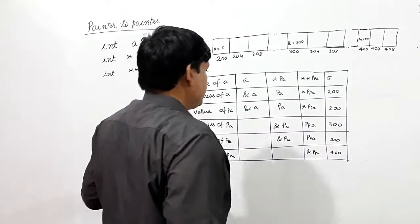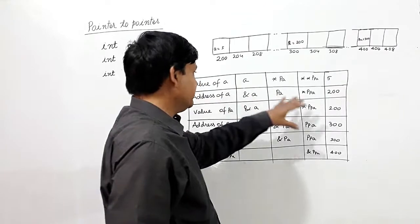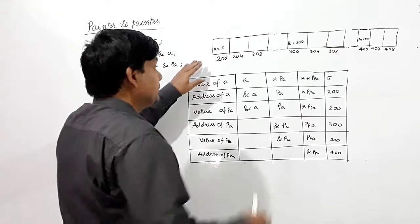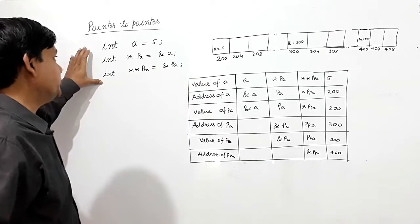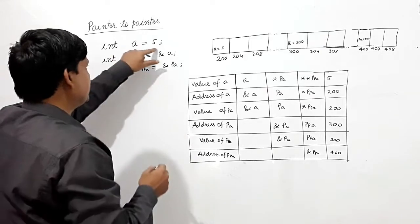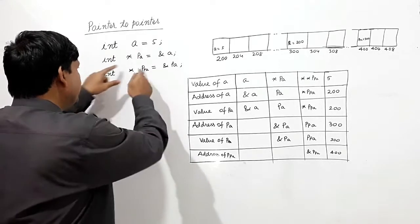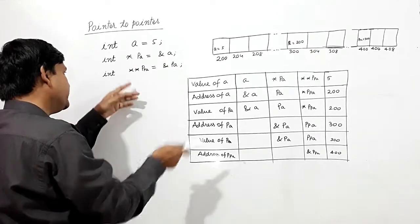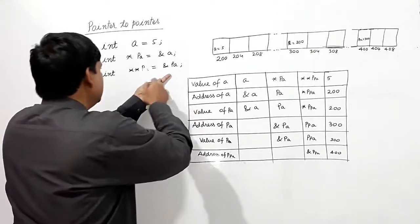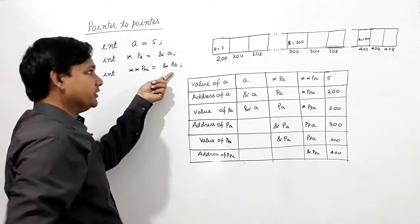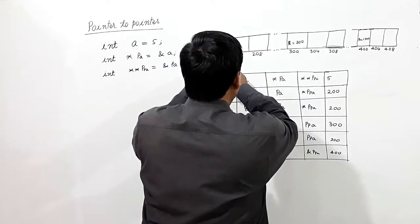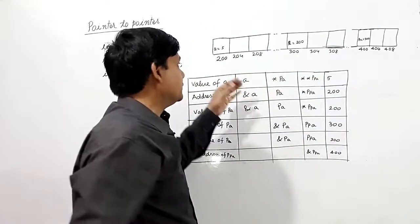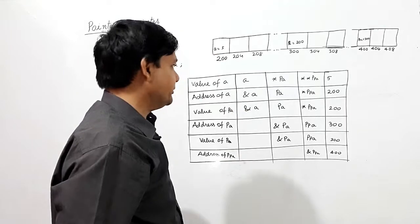I have written a table here. A double pointer has been used where the value of 'a' is assigned 5, a pointer to integer has been assigned the address of 'a', and a pointer-to-pointer has been assigned the address of that pointer. I have already discussed the assignment of these addresses and values in memory.